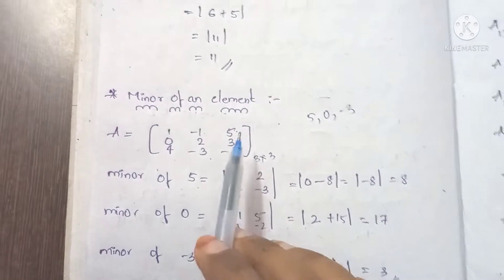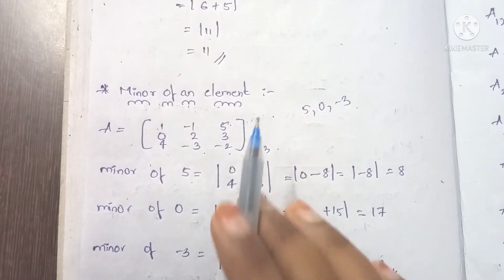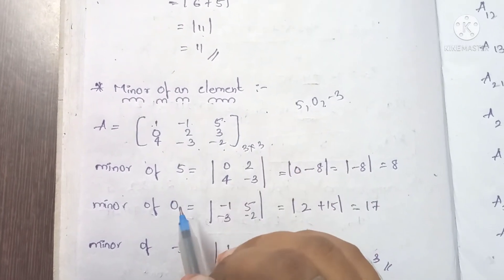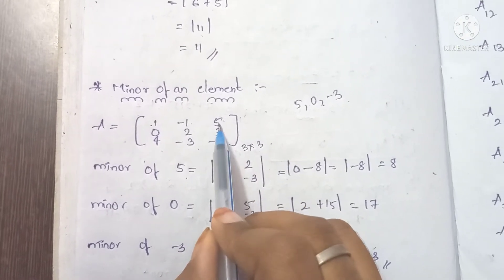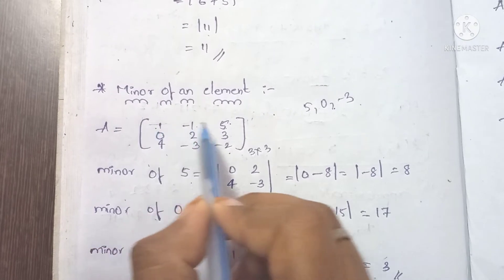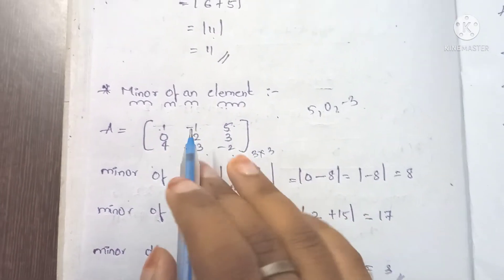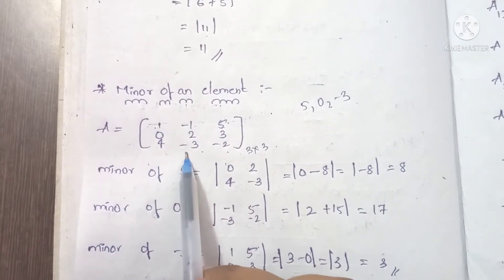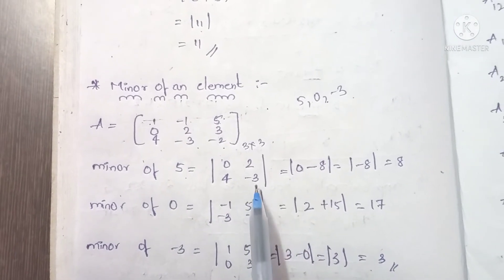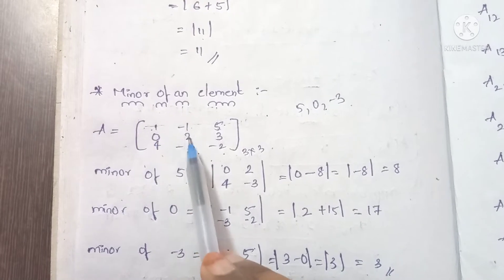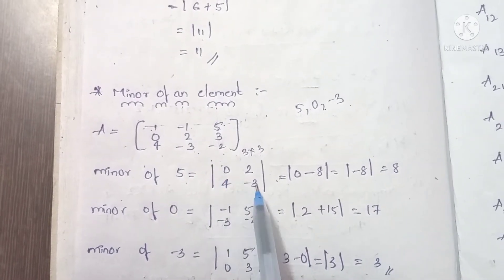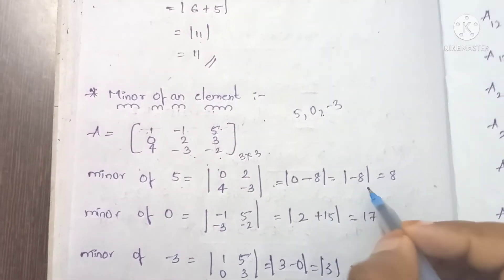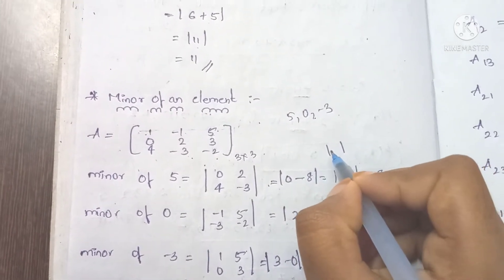To find the minor of 5, we eliminate the row and column containing 5. The element 5 is in row 1, column 3. Eliminating that row and column leaves the submatrix [0, 2; 4, -3]. The determinant of this submatrix is ad minus bc: 0×(-3) minus 2×4 equals 0 minus 8, which equals -8. So the minor of 5 is -8.